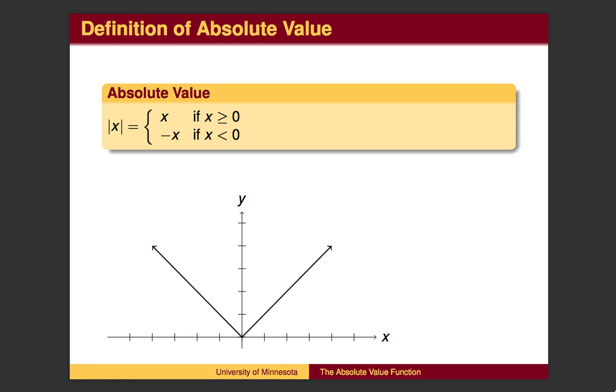Here is a graph of the absolute value function. To the right of the y-axis, where x is positive, the graph is the line y equals x. In other words, a line through the origin with a slope of 1. When x is negative, the y value is positive. That is, the y value has the opposite sign as the x value. So the graph is the line y equals negative x.